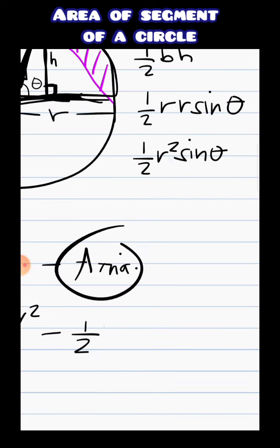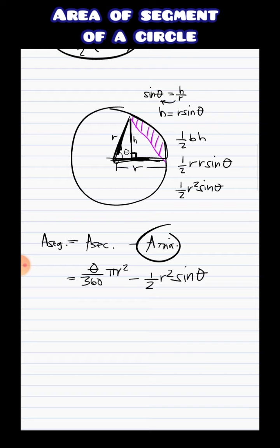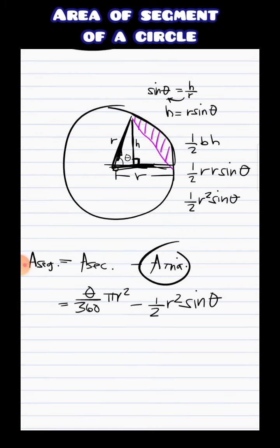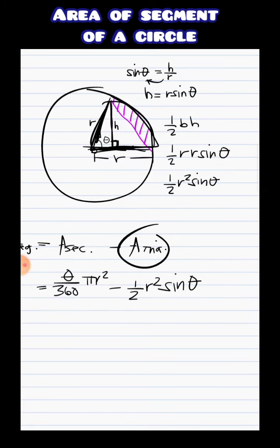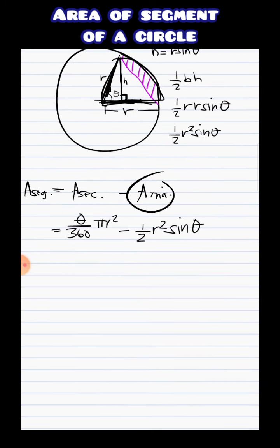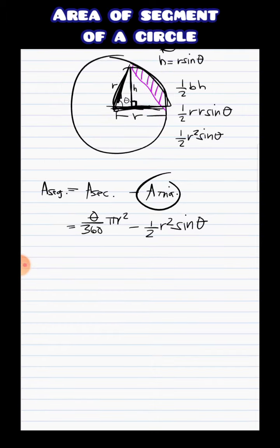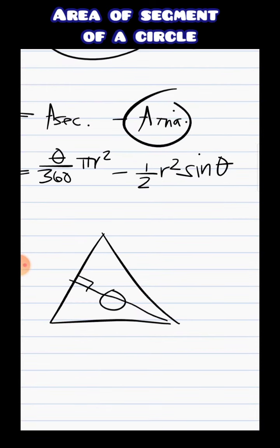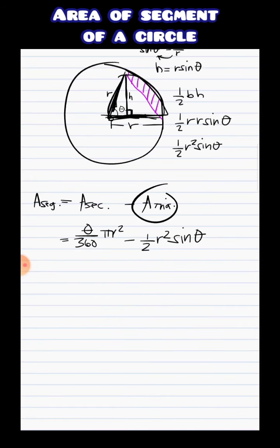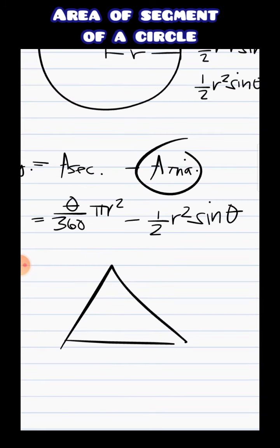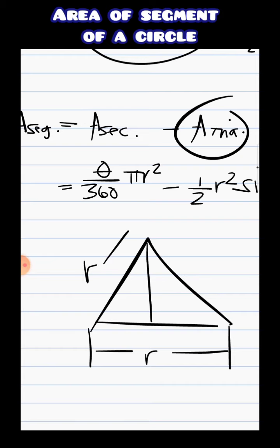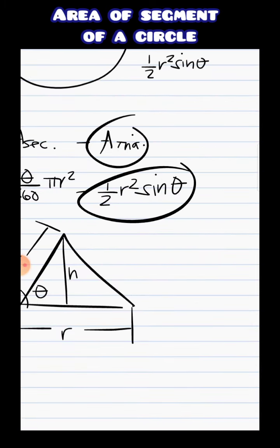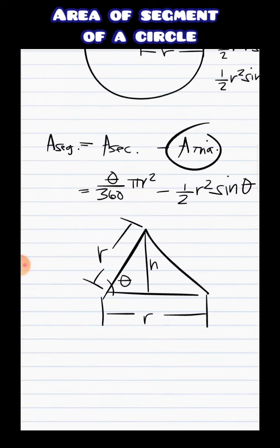So replacing it all: the area of the segment is the angle over 360 times the entire circle — because this area is just a fraction of a circle — minus the area of the triangle. The triangle is not given as a right triangle, so we create a perpendicular line to one of its sides. I choose the side below as my base, where the base is R and the hypotenuse is also R. Solving for h in terms of the angle, we arrive at one half r² sinθ for the triangle area.